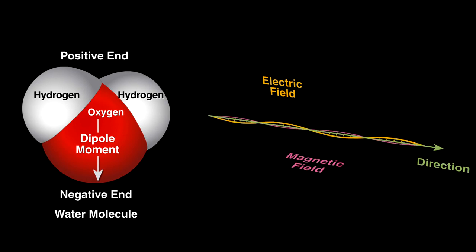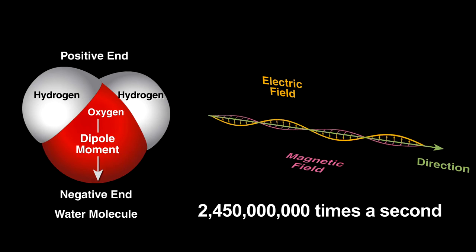By definition, the waves have electrical and magnetic fields that change direction rapidly. For this oven, the direction of the fields change 2.45 billion times per second. Water will try to align with the radiation's electric field.